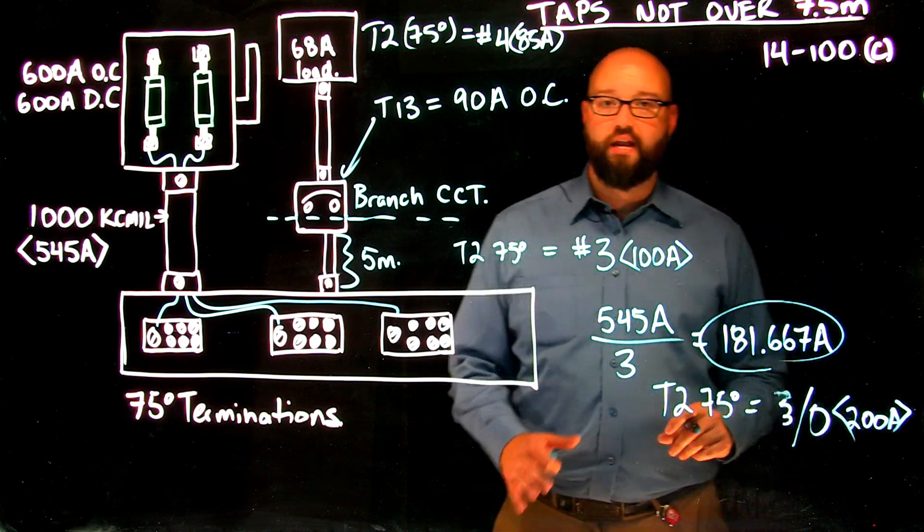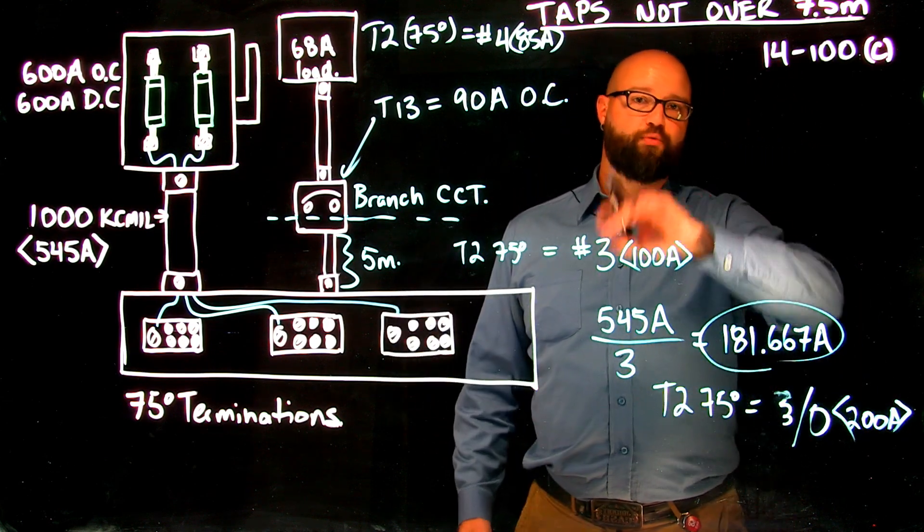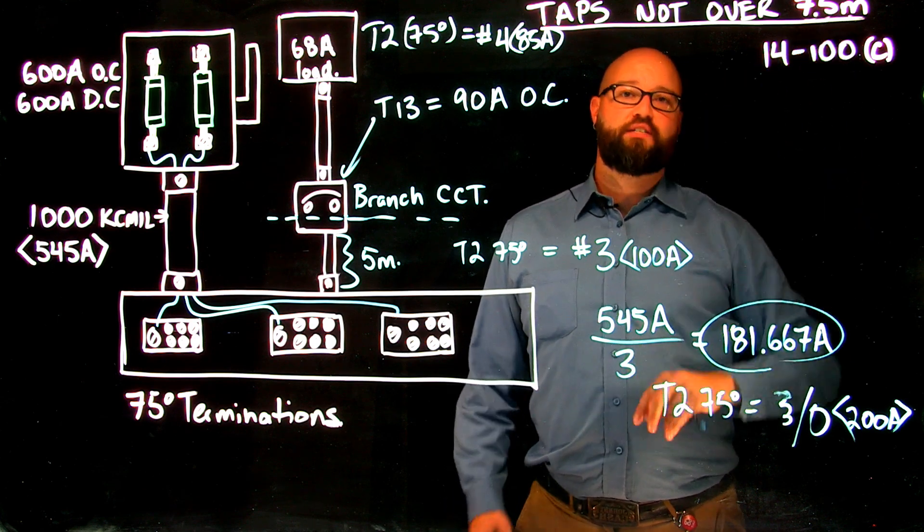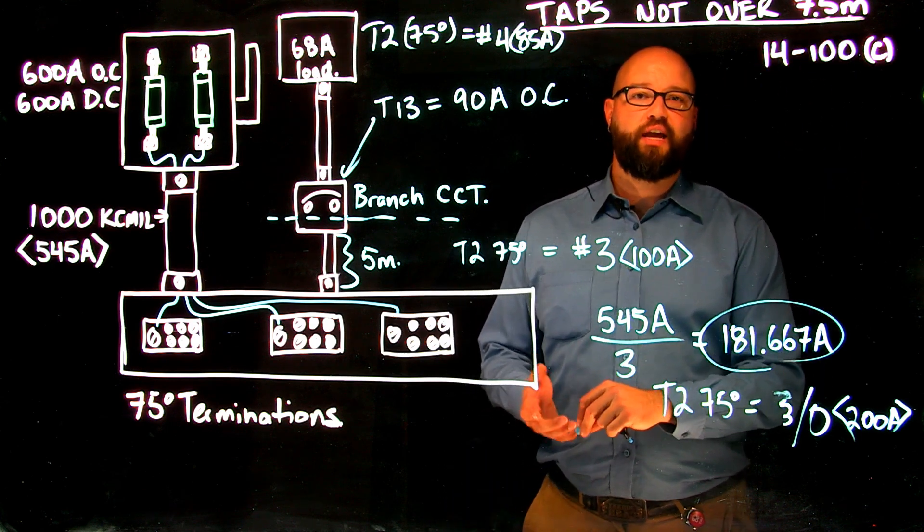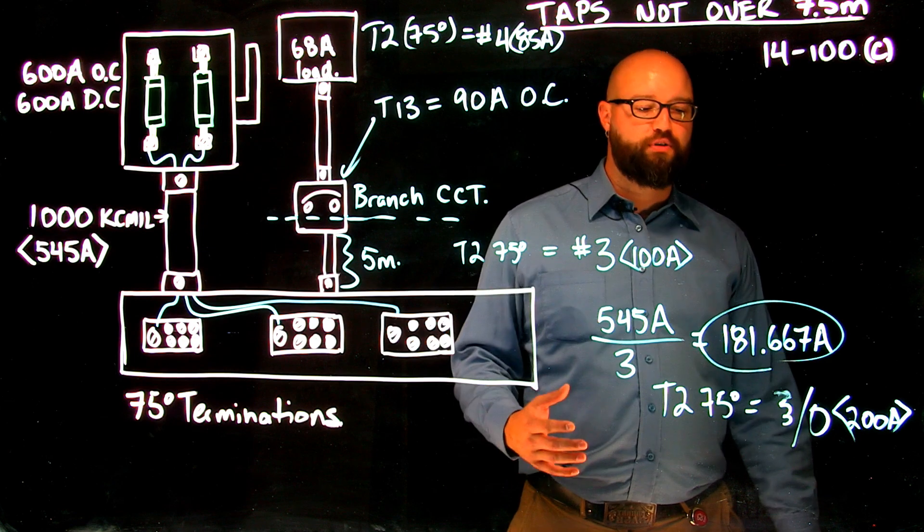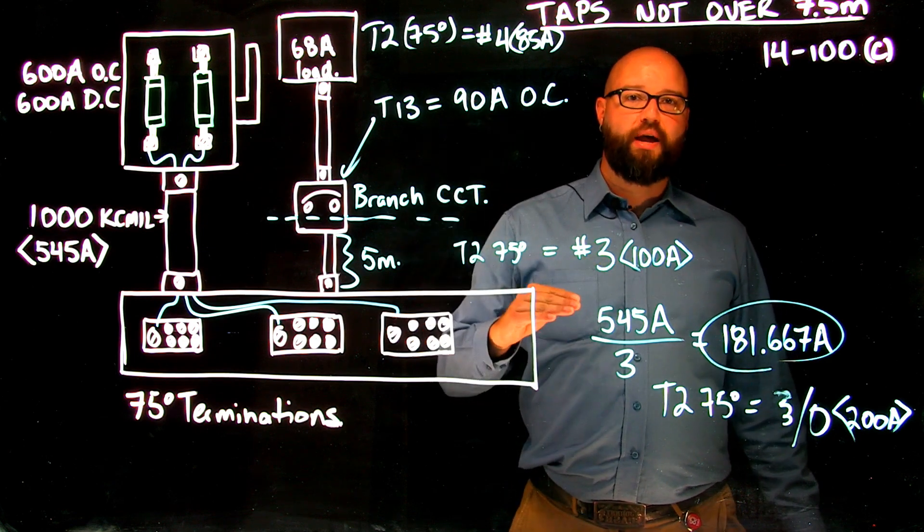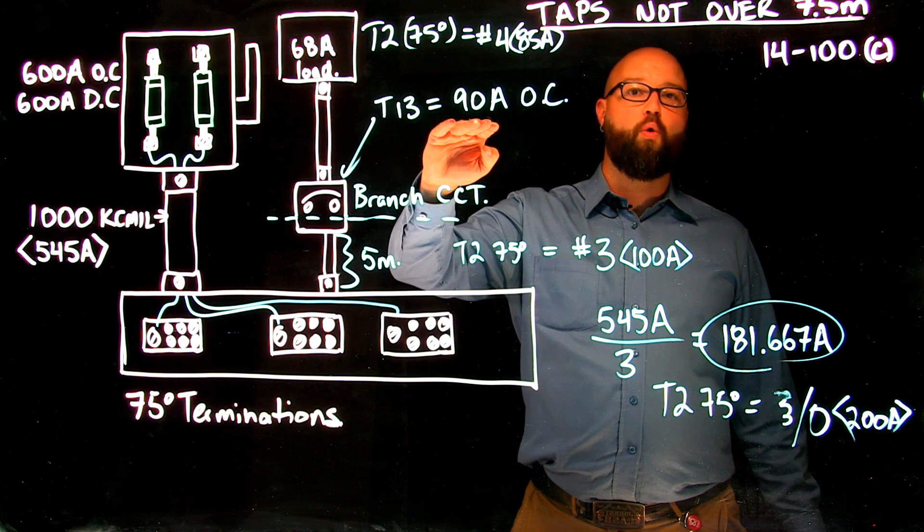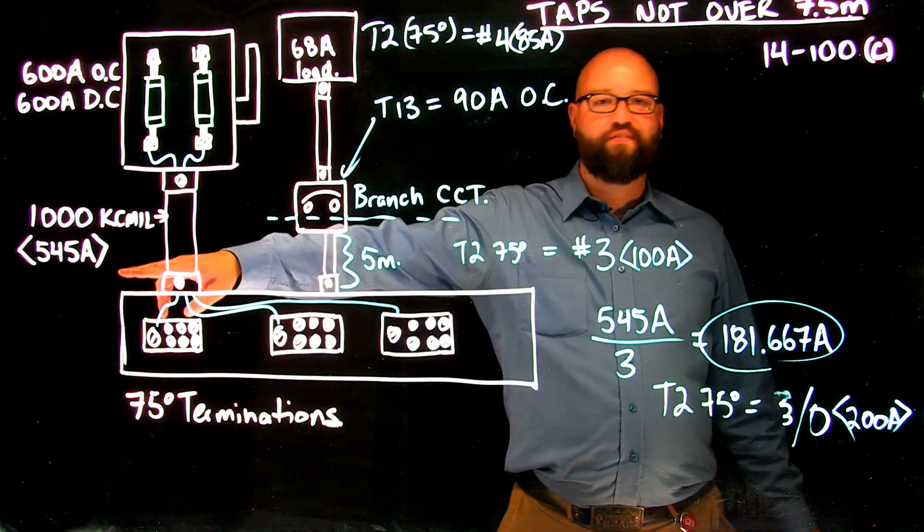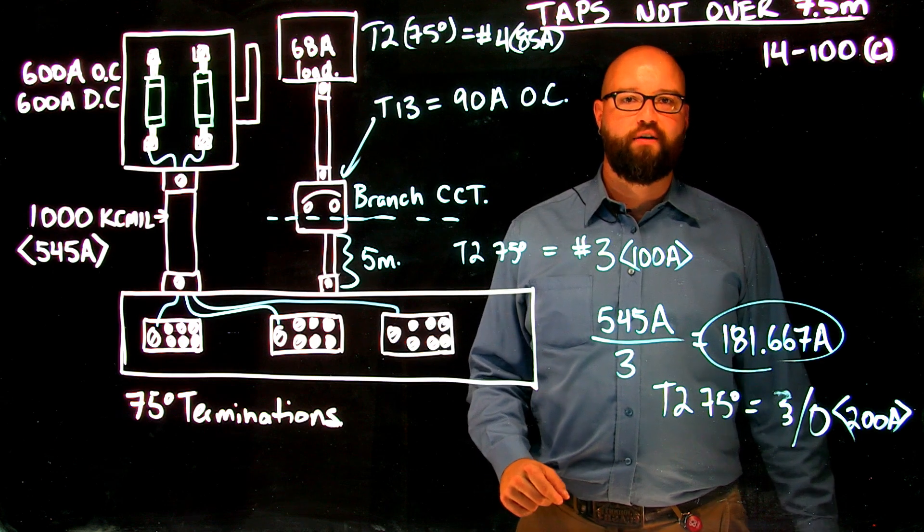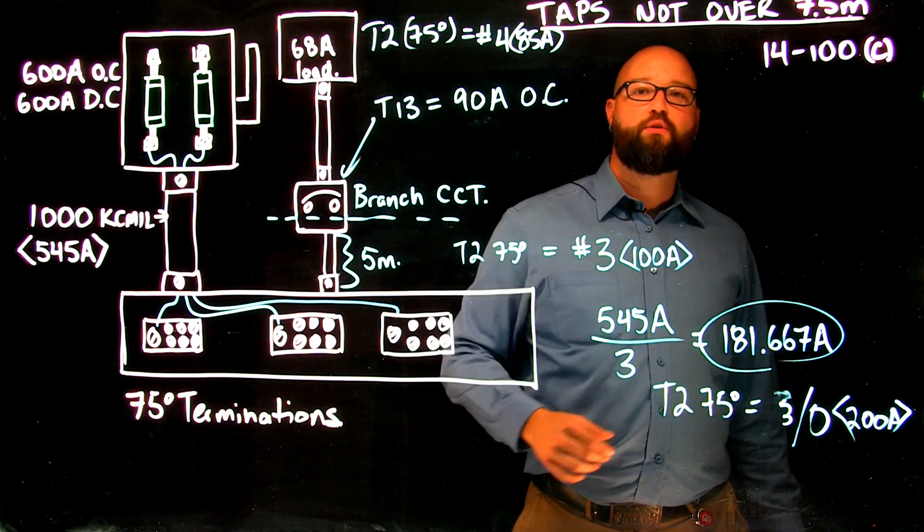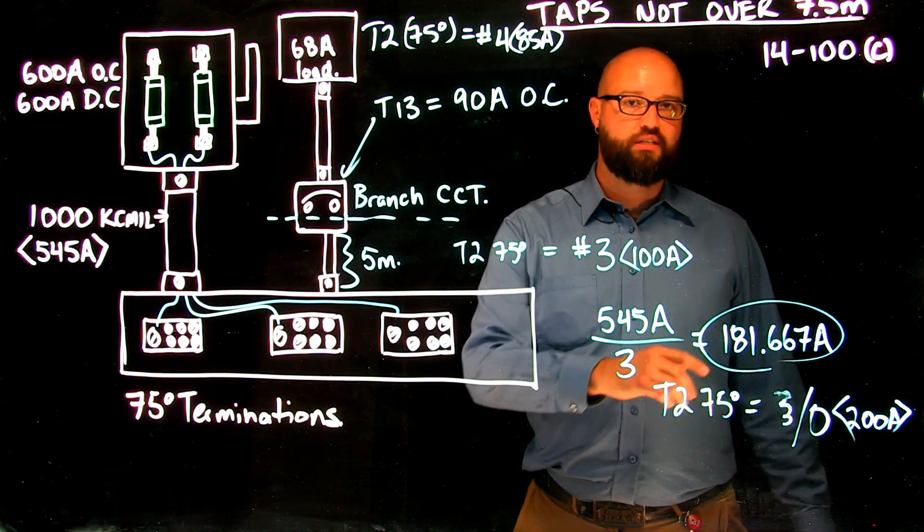So again, when we're selecting a tap conductor that's greater than 3 meters but does not exceed 7.5 meters in length, we have to make the choice between our tap conductor based off of being larger than the ampacity of the overcurrent it supplies or one-third the ampacity of the feeder conductor, whichever is the larger of the two, which in this case wins. Not always the case, but in this case it does.